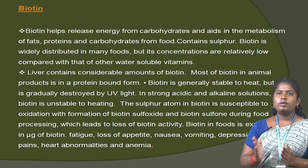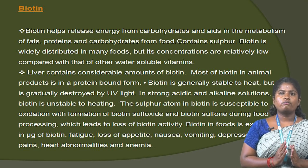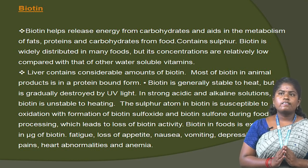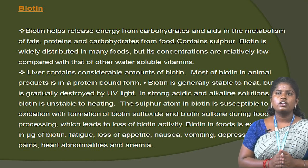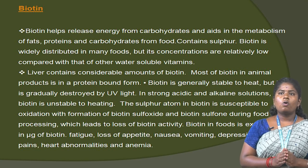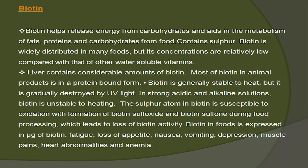Biotin is an important vitamin that helps release energy from carbohydrates and aids in the metabolism of fat, protein and carbohydrates from food. Biotin contains sulfur. It is widely distributed in many foods but at relatively low concentrations compared with other water-soluble vitamins. Liver contains a considerable amount of biotin, and most biotin in animal products is in protein-bound form. Biotin is generally stable to heat but is gradually destroyed by ultraviolet light. In strong acidic and alkaline solutions, biotin is unstable to heating. The sulfur atom in biotin is susceptible to oxidation, forming biotin sulfoxide and biotin sulfone during food processing, which leads to loss of biotin activity. Deficiency symptoms include fatigue, loss of appetite, nausea, vomiting, depression, muscle pain, heart abnormalities and anemia.